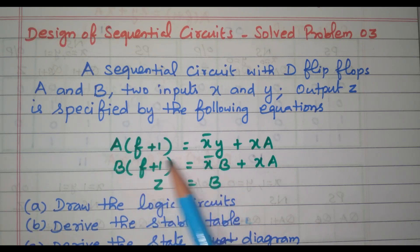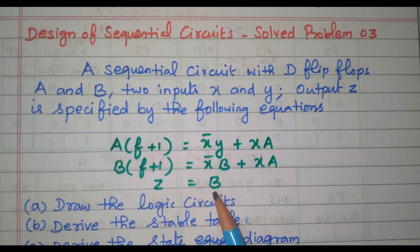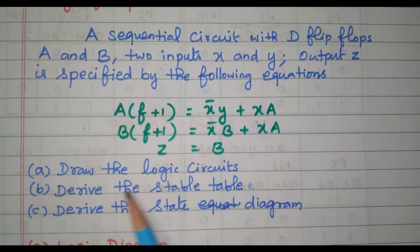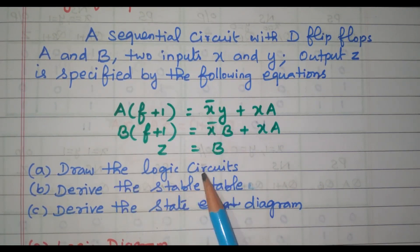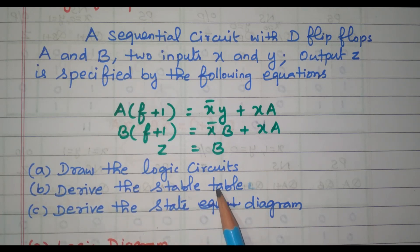So A, the next state is given as X-bar·Y plus X·A; B(t+1) is given as X-bar·B plus X·A; Z equal to B. The question is: draw the logic circuit from the given equations, then derive the state table, and from the state table we need to frame the state diagram.